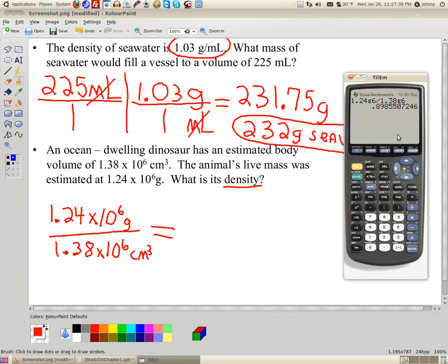So, when I press enter, I end up getting my answer. Notice I get this big long number here. 0.8985507246. I need three sig figs. So, I'm going to write down 0.899.